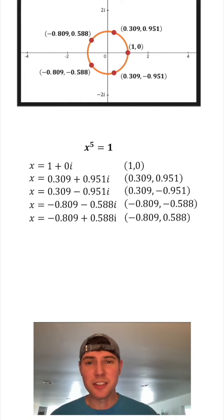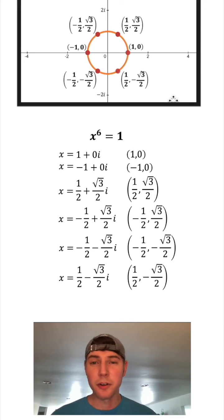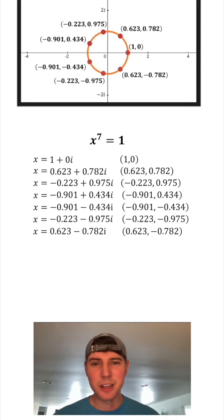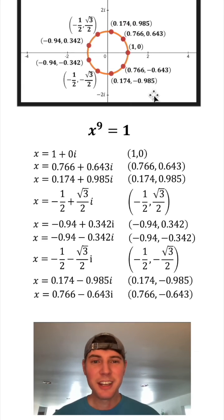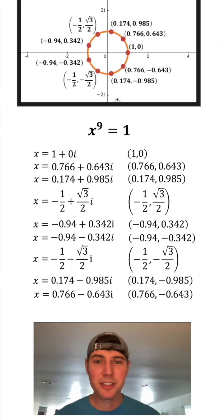Same thing is true for x to the fifth. Here's the corresponding points for the five complex solutions of x to the fifth equals 1. Here they are for x to the sixth equals 1. x to the seventh equals 1. x to the eighth equals 1. Here are the corresponding points for the nine solutions to x to the ninth equals 1. And it does cut the circle into nine congruent arcs. And the points for the solutions to x to the 10 equals 1 also cuts the circle into 10 equal parts. And this will always happen no matter how big your exponent is. How exciting.